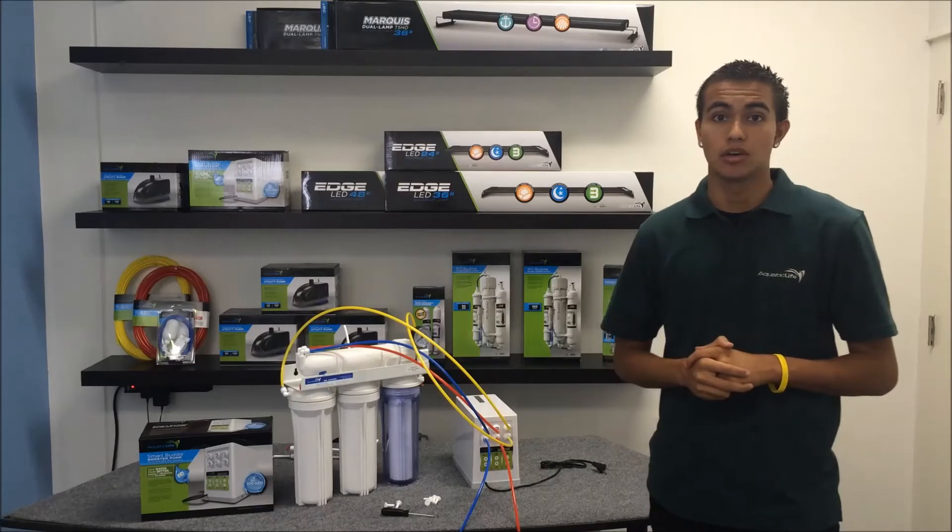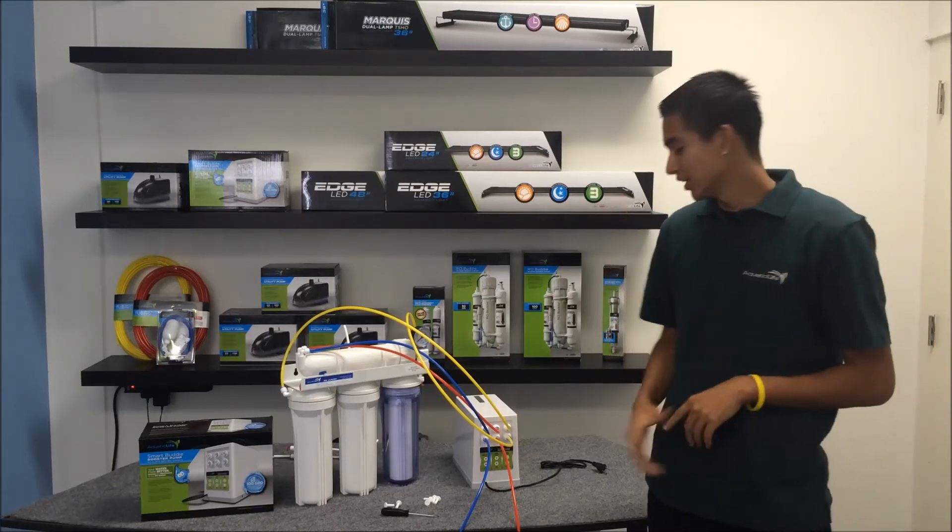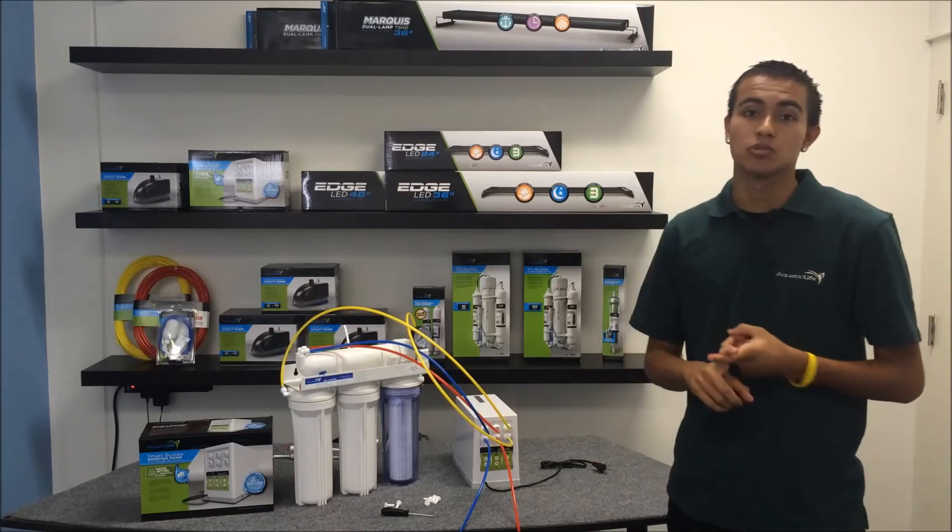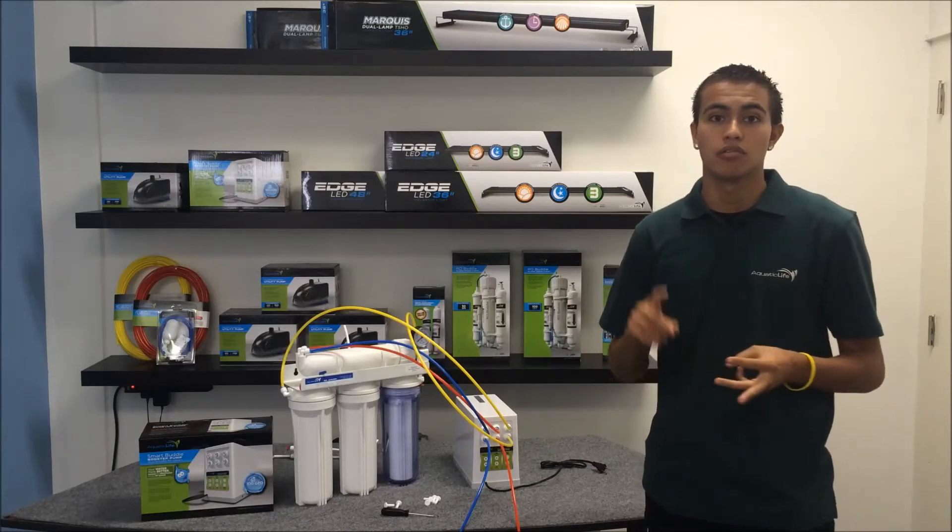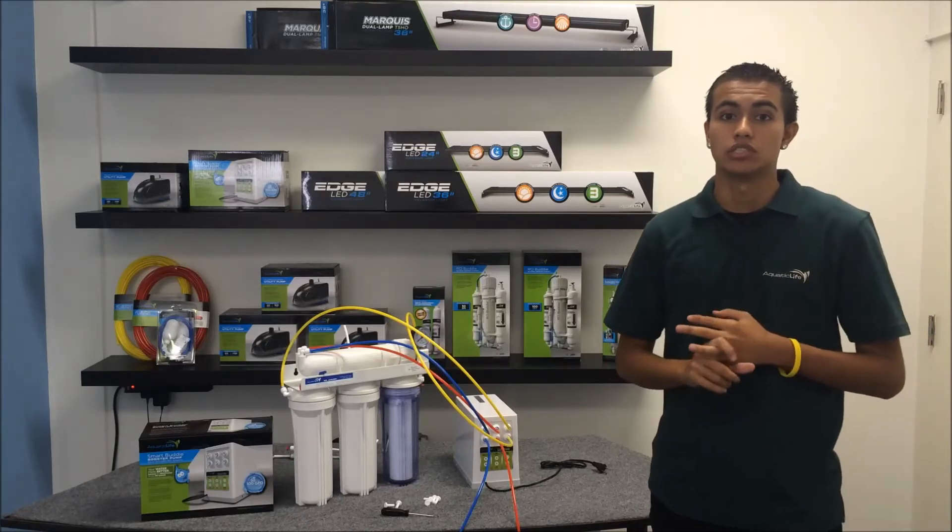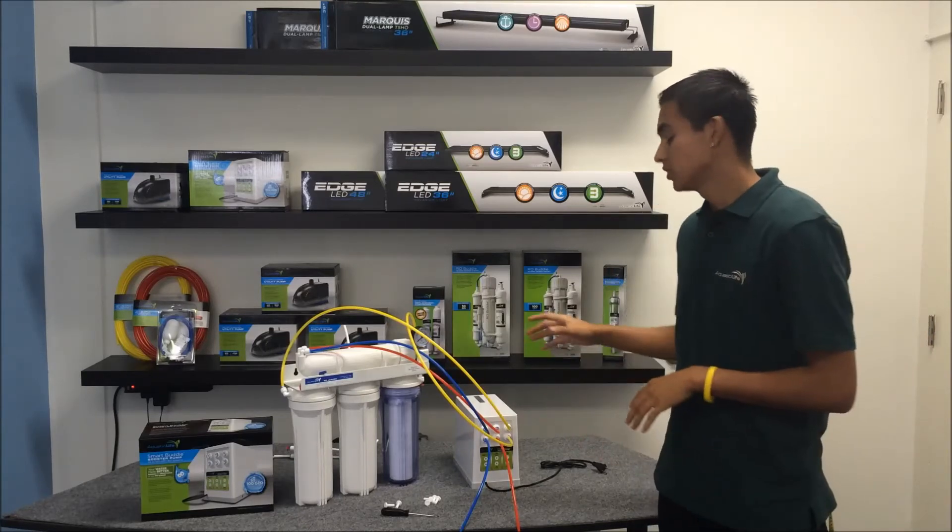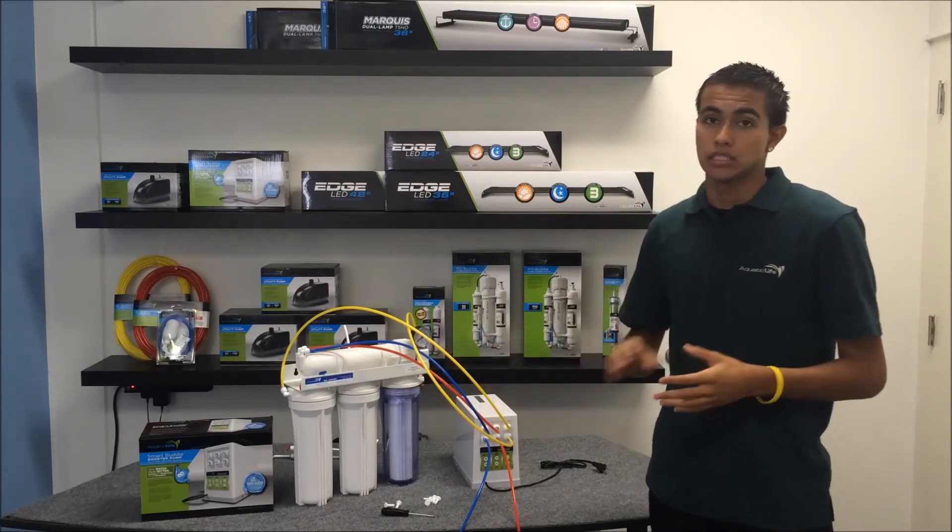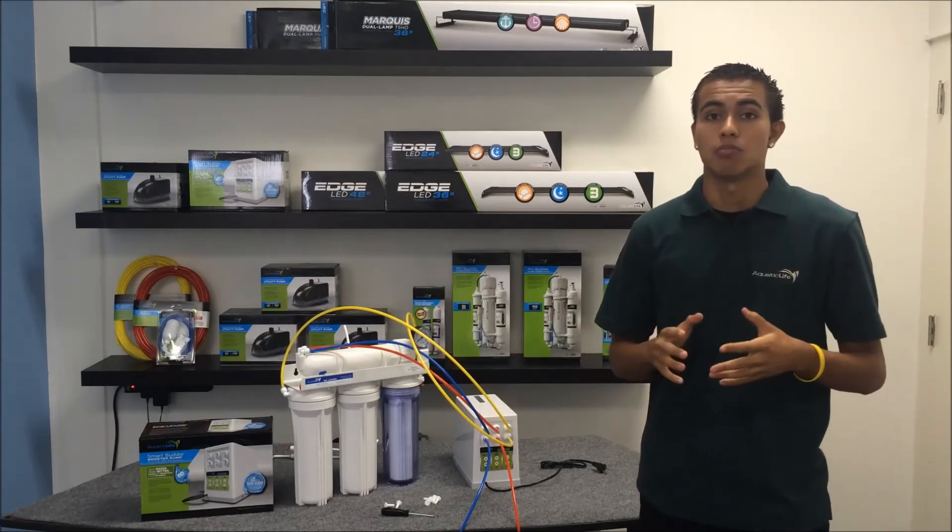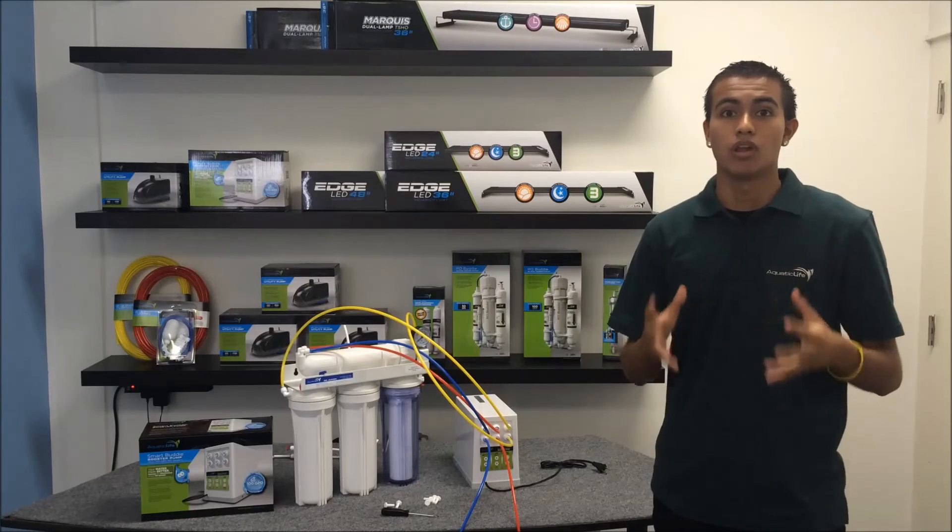Before we go, here's why we decided to call this the SmartBuddy. Inside this white box are multiple sensors, a solenoid valve, a flow restrictor, and a low voltage transformer. This means every time you decide to make water and turn this on, it's going to flush the membrane, and that's going to help prolong your membrane's life.